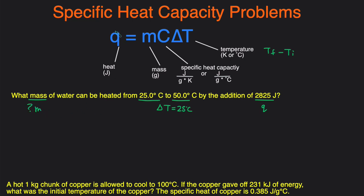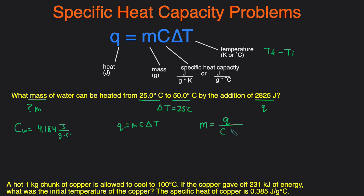We have Q, we have delta T, but we're not given anything about the specific heat. That's because the specific heat of water is a value you typically memorize — it's 4.184 joules per gram times degrees Celsius (sometimes written as 4.18). So we have Q equals MC delta T; our goal is to solve for M. We isolate M by dividing both sides by C delta T, giving mass equals Q divided by the specific heat times the change in temperature.